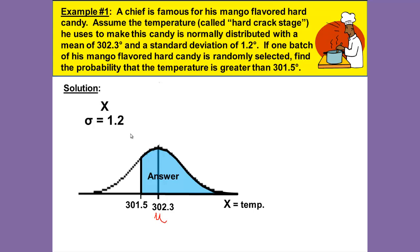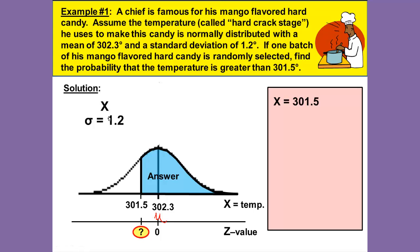Next, label underneath the X line the Z values and we will want to find the Z value that corresponds to the 301.5, remembering that every X value has a corresponding Z value. If X equals 301.5, we will need to find its Z value. Remember that our formula for Z is Z equals X minus the mean over the standard deviation, or X minus mu over sigma.